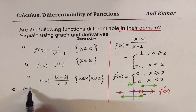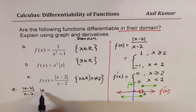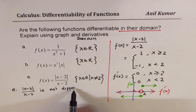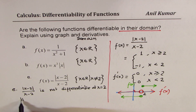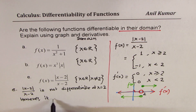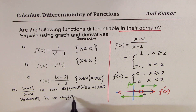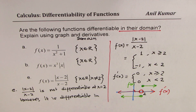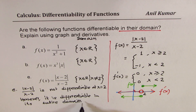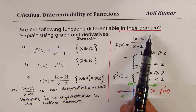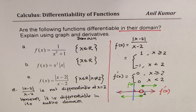We can write: absolute value of x minus 2 over x minus 2 is not differentiable at x equals 2. However, it is differentiable in its entire domain. The question asks 'in their domain,' not 'in the domain of all real numbers.' That is how this question is very different. So if you are getting this in a true or false question, the answer is true.